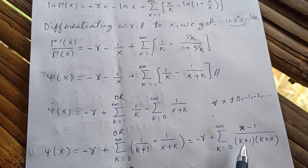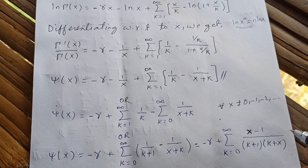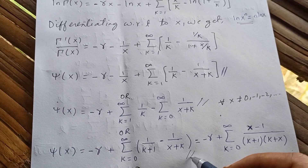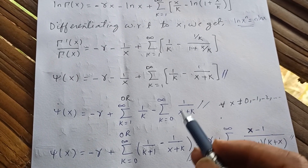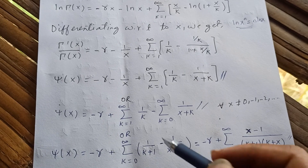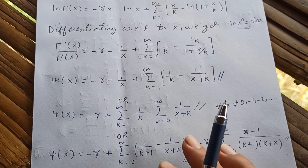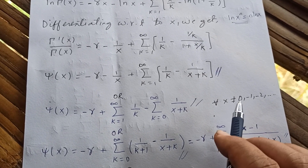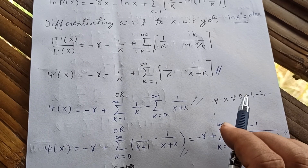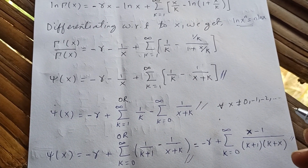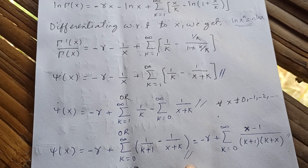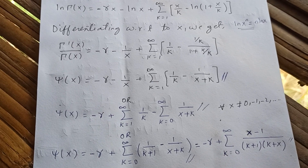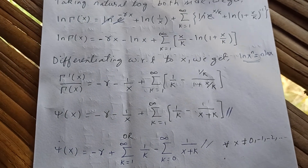Or you can simplify further: negative gamma plus the sum from k equals zero to infinity of x minus one over (k plus one)(k plus x). All of these are equivalent representations of the digamma function. Note that x must not equal zero or any negative integer — that is, x must be a positive number or natural number. These are all valid series representations of the digamma function.